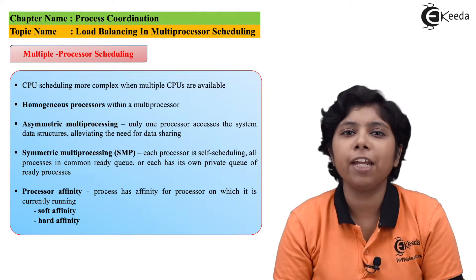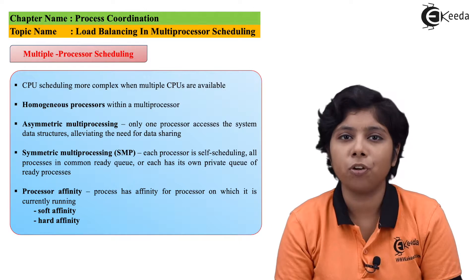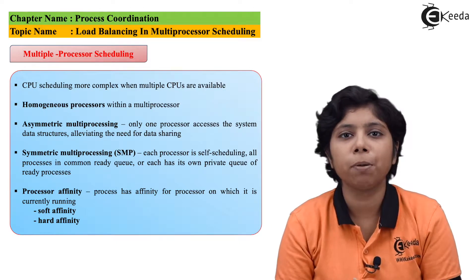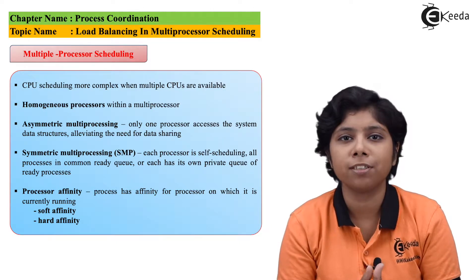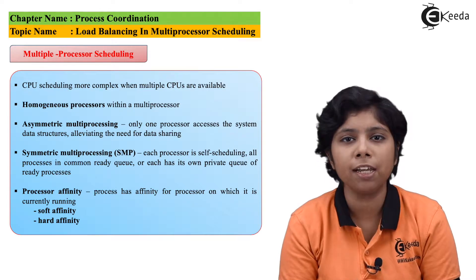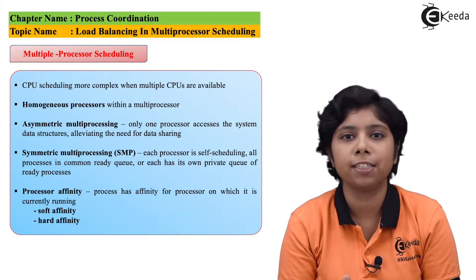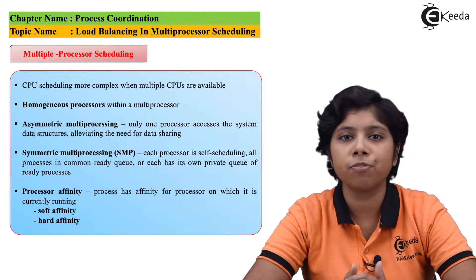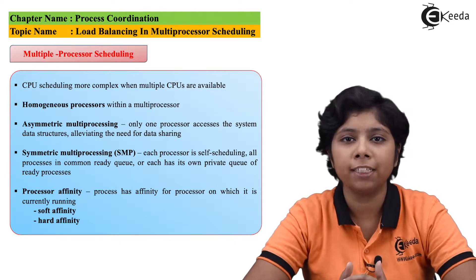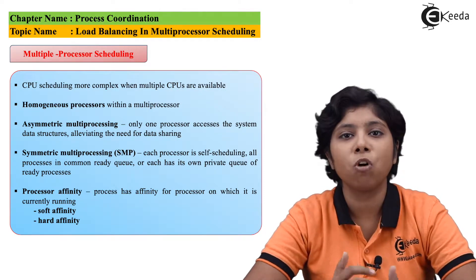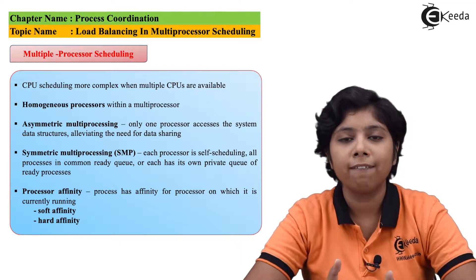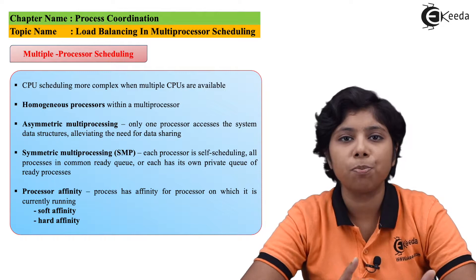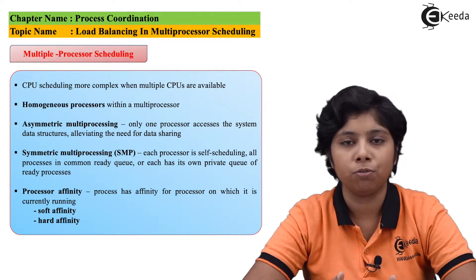It is very important to note that the workload should be balanced between every processor, distributed evenly between the system. Otherwise, the other processors would become idle while one processor becomes overloaded, with the rest of the processors waiting for the CPU.